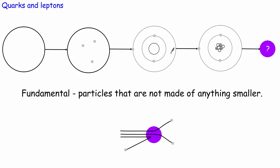Hello and welcome to this video where today we're going to be having a look at how we classify particles. For a long time scientists have been trying to find out what the very smallest part of matter could possibly be. We started off by thinking that the smallest part of matter could be an atom and we considered it just to be basically a solid sphere.